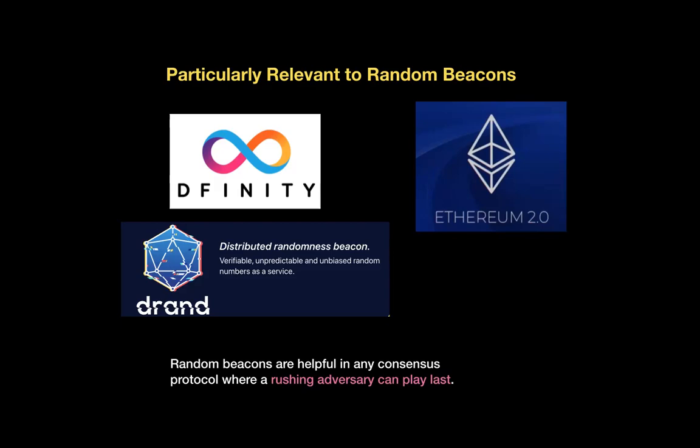Situations where we might want randomness beacons include consensus protocols — this has come up in DFINITY, Ethereum 2.0, and the League of Entropy. It can solve problems where a rushing adversary plays last and can hash something 5, 10, or 20 times until they get the most favourable outcome and then submit. This can have really bad effects on a consensus protocol — for example, if you're electing the leader for the next round, a rushing adversary might always ensure one of their corrupted nodes becomes leader and prevent progress from happening.